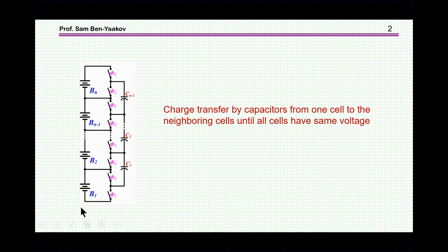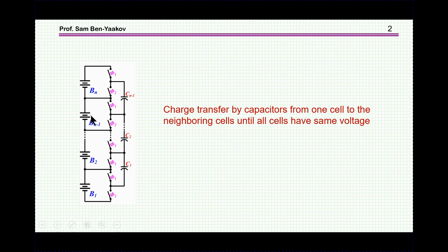I'm considering here a string of batteries which are to be balanced, and this is done by flying capacitors which are connected by switches. All the upper switches are turned on together, and then the lower switches are also turned on together. So the capacitors are actually moving — connected to an upper battery and then to a lower battery.